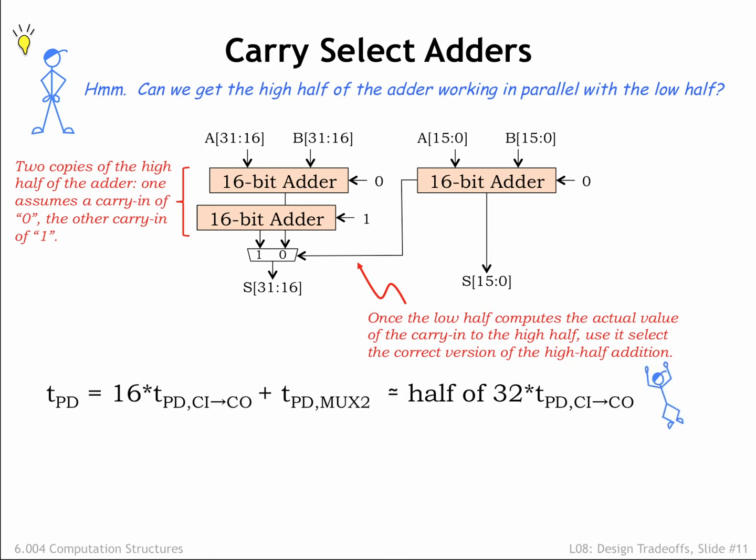The latency of this carry-select adder is just a little more than the latency of a 16-bit ripple-carry addition. This is approximately half the latency of the original 32-bit ripple-carry adder. So at a cost of about 50% more circuitry, we've halved the latency.